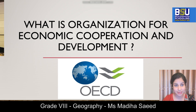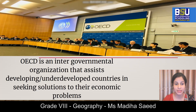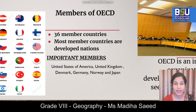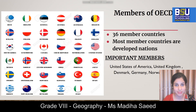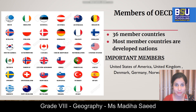OECD is basically an intergovernmental organization that assists developing and underdeveloped countries in seeking solutions to their economic problems. It has 36 permanent members and most member countries are advanced economies. You can see the flags of all member countries in front of you. Some very prominent members are the United States of America, United Kingdom, Denmark, Germany, Norway, and Japan.